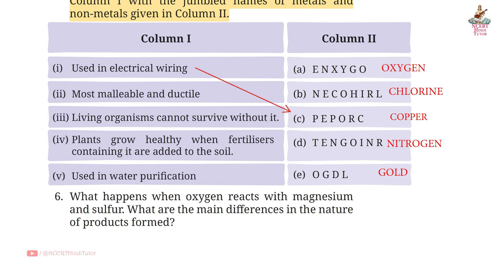Second: Most malleable and ductile — Answer E: Gold. Third: Living organisms cannot survive without it — Answer A: Oxygen. Fourth: Plants grow healthy when fertilizers containing it are added to the soil — Answer D: Nitrogen. Fifth: Used in water purification — Answer: Chlorine.